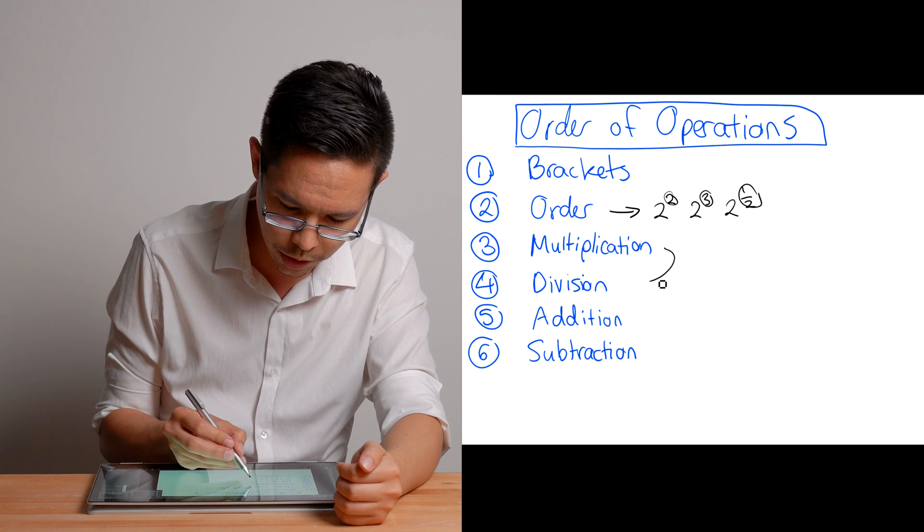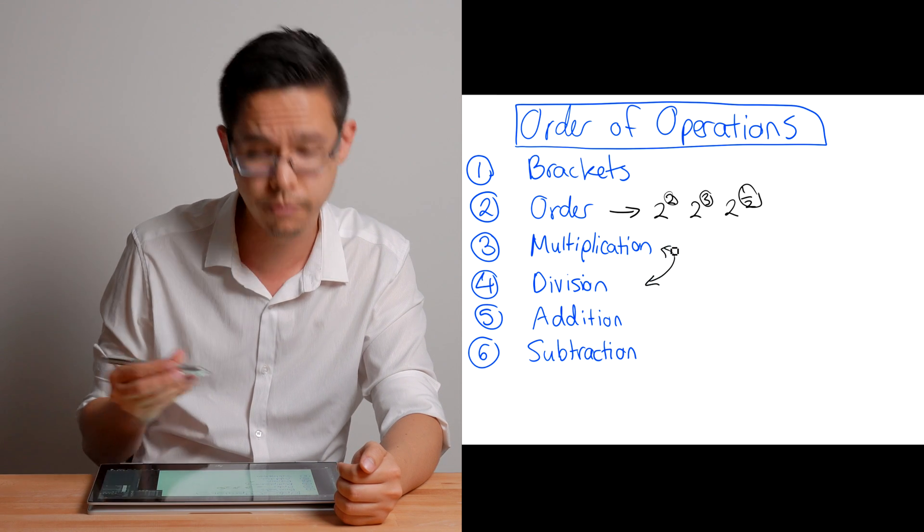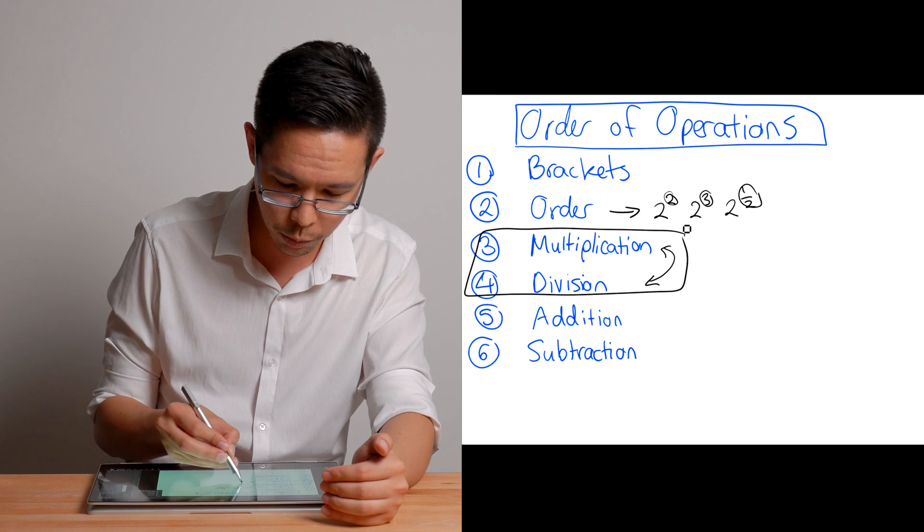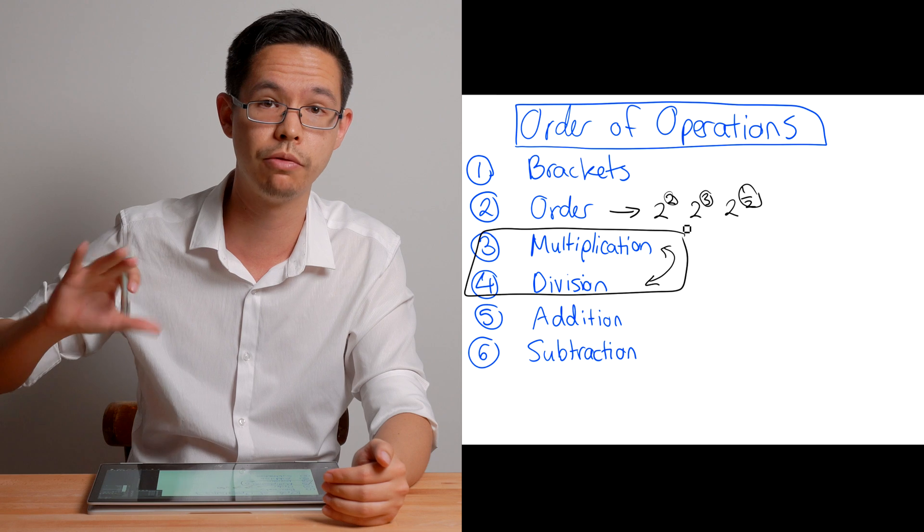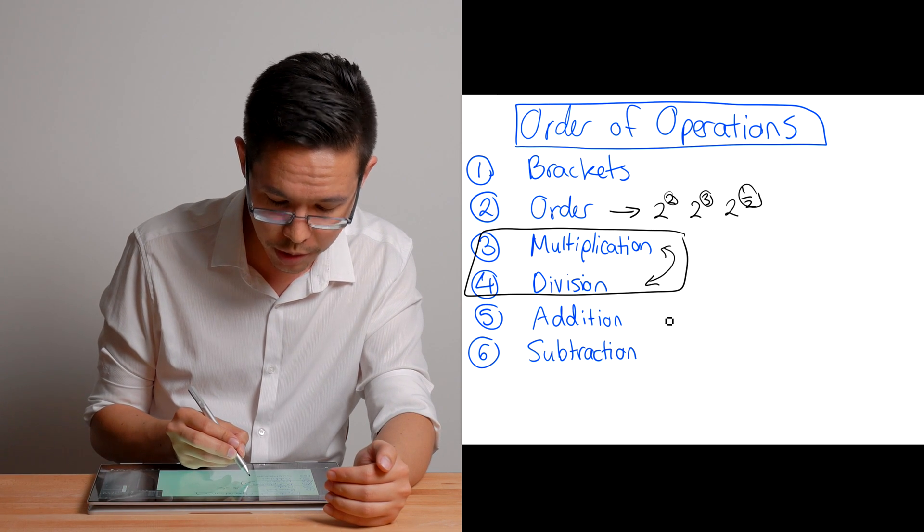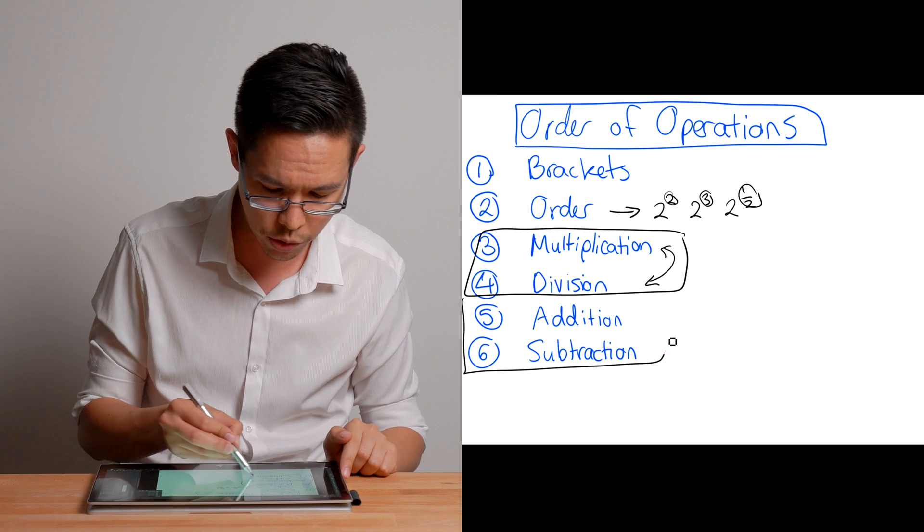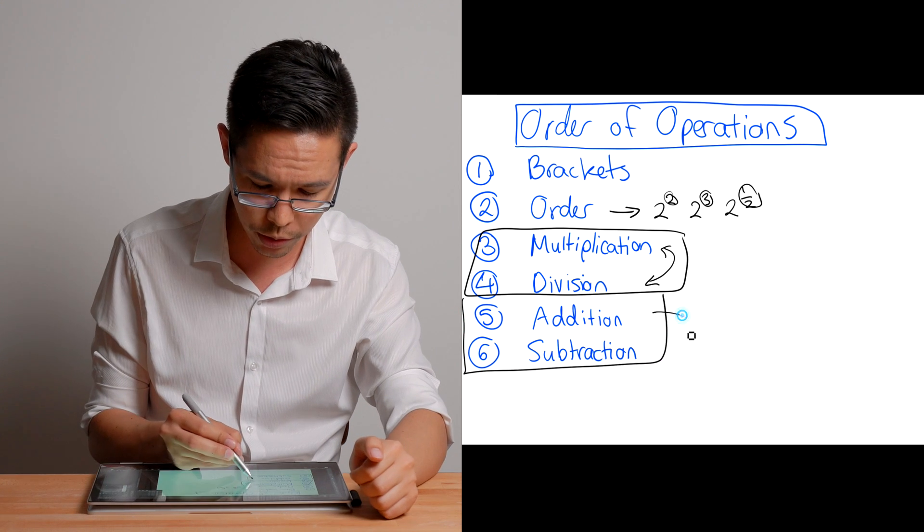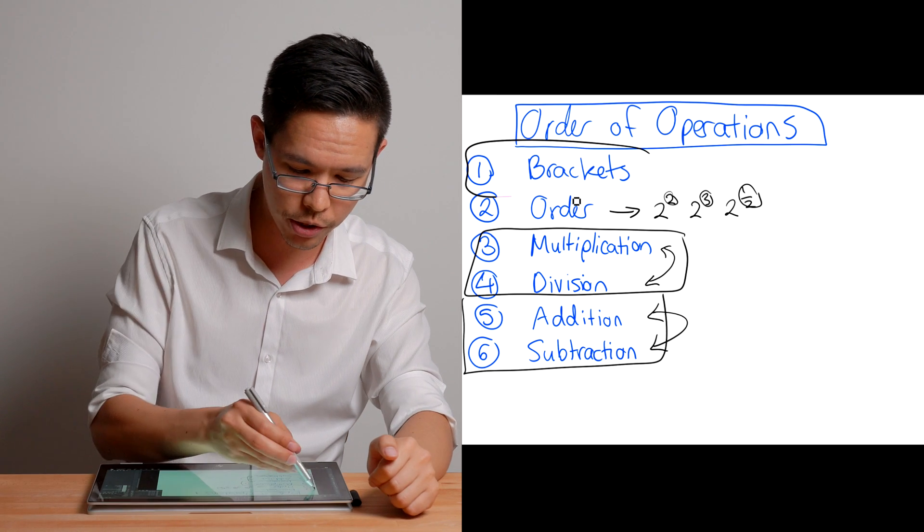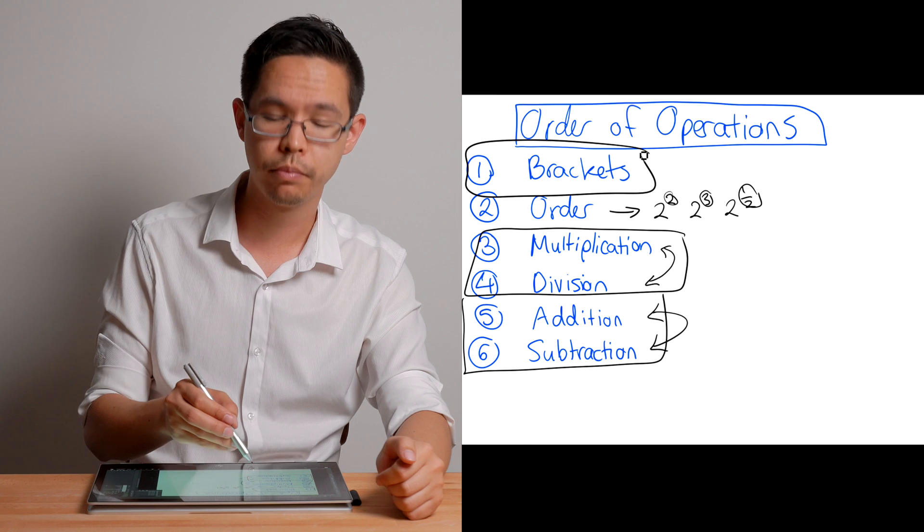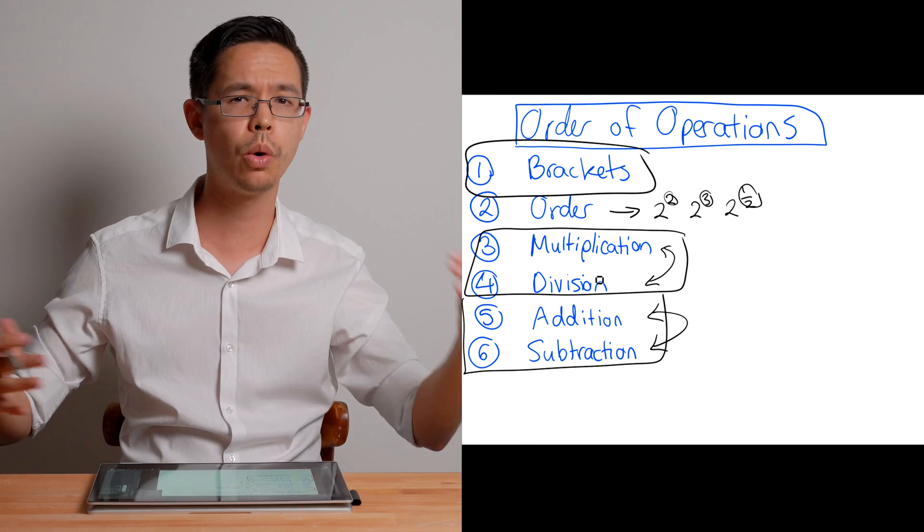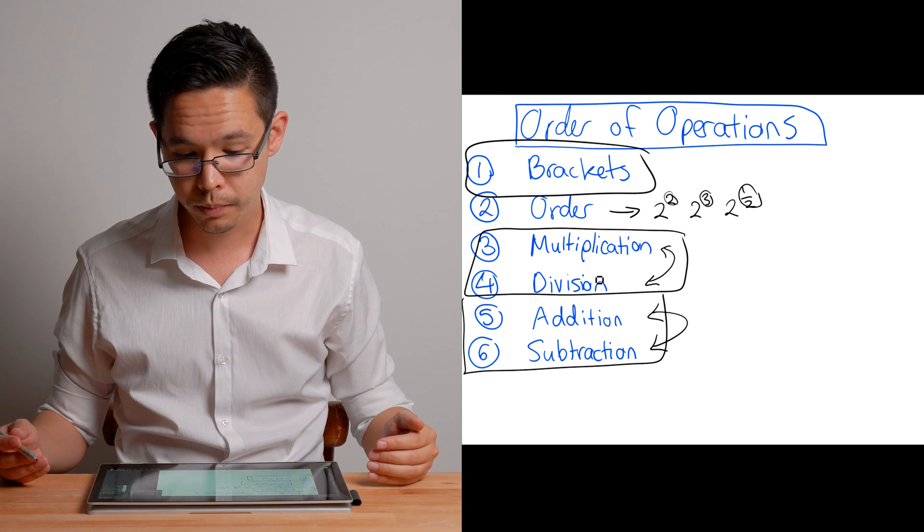Then next thing is division. Now, multiplication and division, depending on who your teacher is, they might say division goes first, then multiplication. It doesn't matter. In fact, these two here, it won't matter which order you do those two. So if you want to do division first, that's cool. If you want to do multiplication first, that's also cool. Next thing comes addition and subtraction. And the same thing applies to addition and subtraction. It won't matter which way around you do them. So if you want to do subtraction first, then your addition, it doesn't matter. What's more important is that you start with brackets, then you do order, then you do multiplication or division, and then you do addition or subtraction.